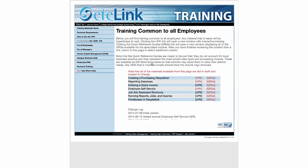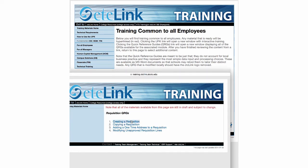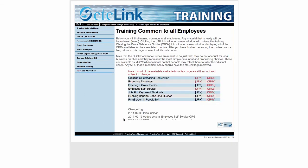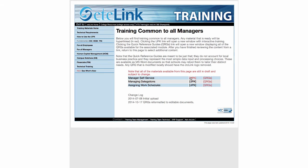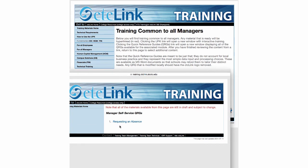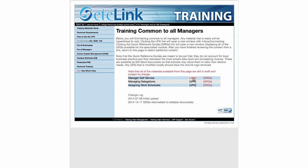Under All Employees you'll see various training topics — for example, creating a purchase requisition. There's a UPK so you can watch a video on how it's done, or there are quick reference guides with documents on how that process works. When you click on quick reference guides, you'll see four different documents you can access. Under All Managers you'll see manager self-service, and in the quick reference guides you'll find documents for that as well.